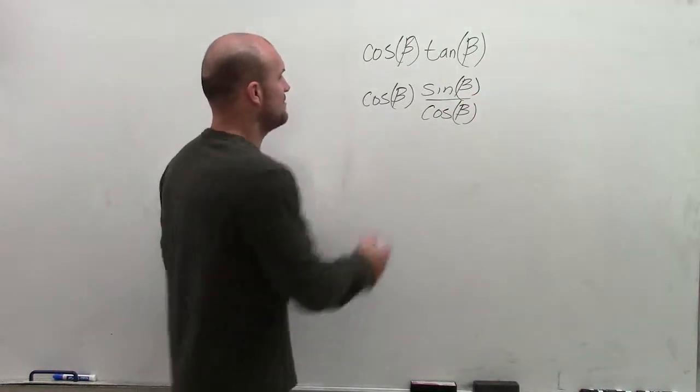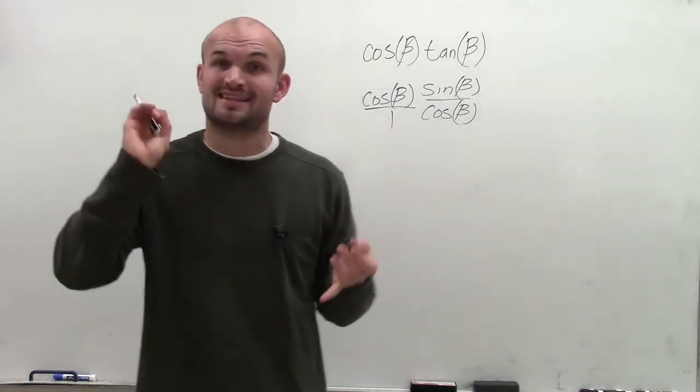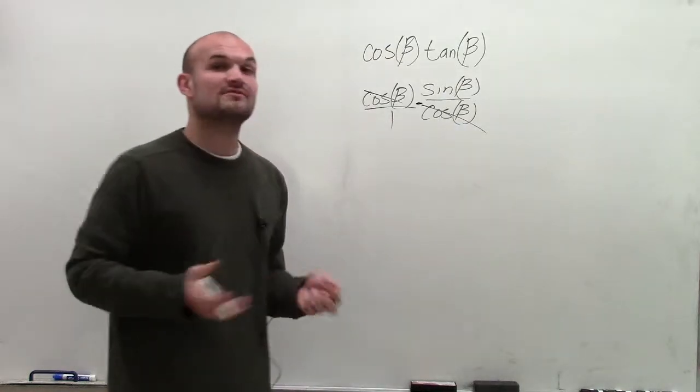Therefore, what I notice is as I multiply across, I need to remember that my cosine of beta is in the numerator. As I multiply, I notice that my cosine of betas are going to divide into one.